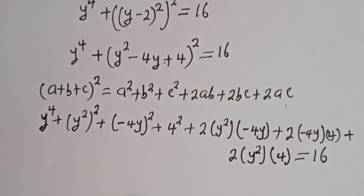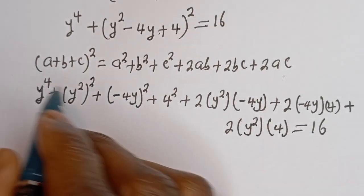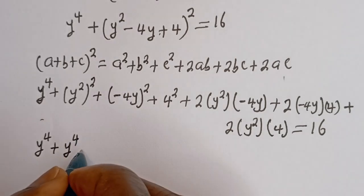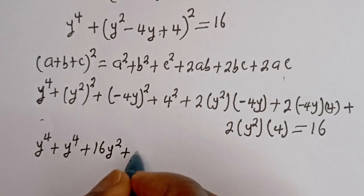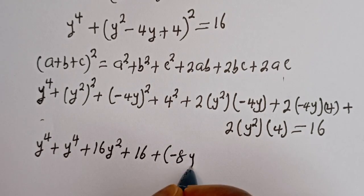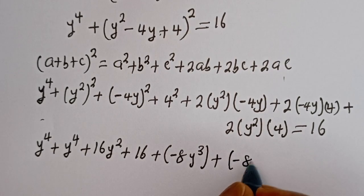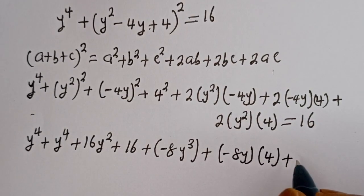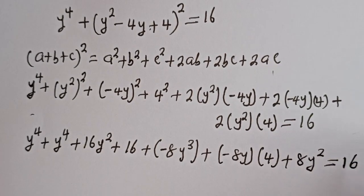Following this rule, we have y to the power of 4 plus y to the power of 4, plus 16y squared plus 16, plus the cross terms: minus 8y to the power of 3 plus minus 8y bracket 4, plus 8y squared is equal to 16.